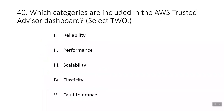Question forty: which categories are included in the AWS Trusted Advisor dashboard? Select two. The correct answers are performance and fault tolerance. The five categories in the AWS Trusted Advisor dashboard are cost optimization, performance, security, fault tolerance, and service limits.